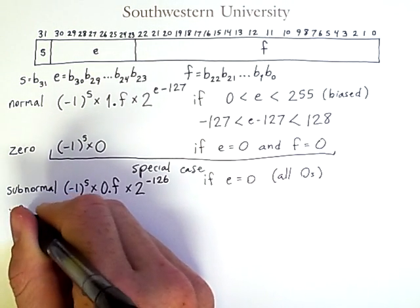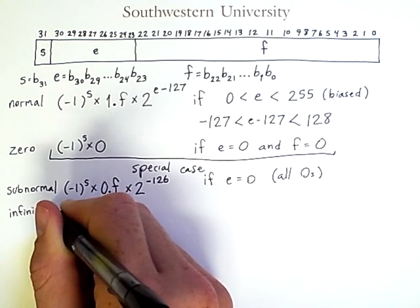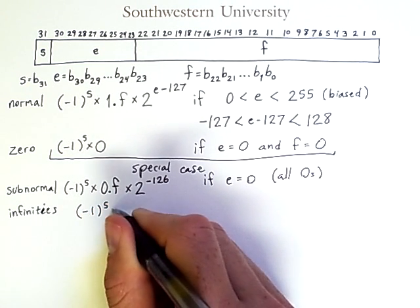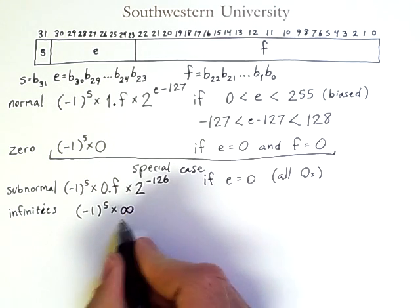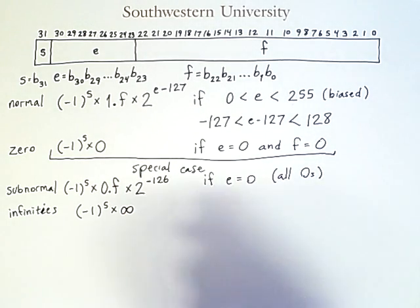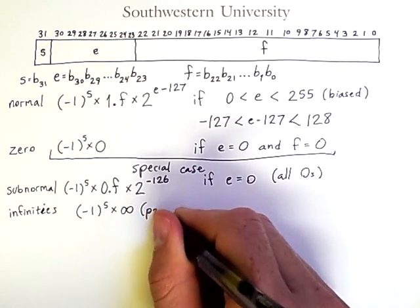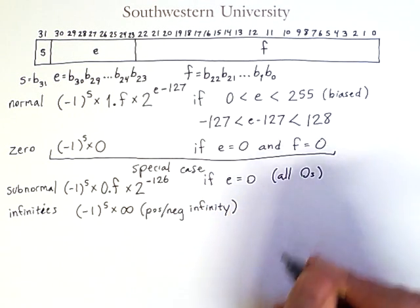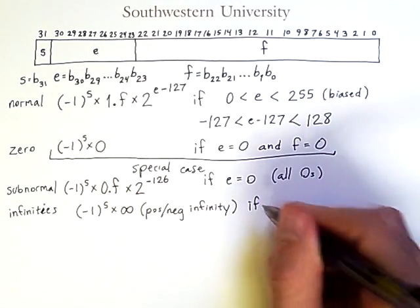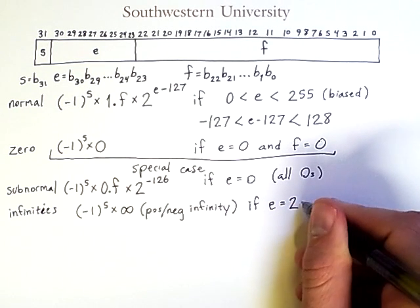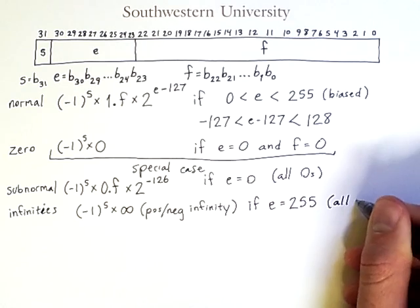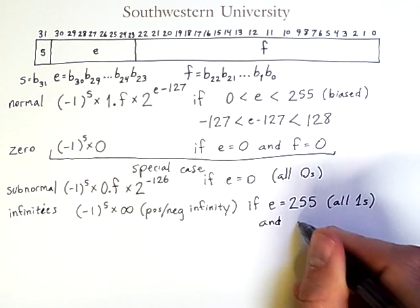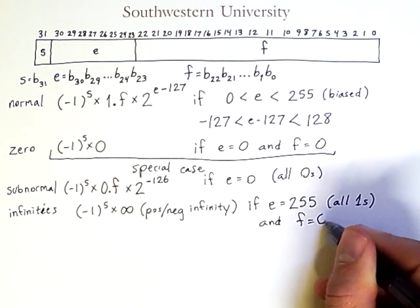One is the infinities. Specifically, positive or negative infinity. This is the infinity symbol. Sort of looks like an 8 turned on its side. And this is how we interpret the floating point number if E is equal to 255. In other words, all ones. And also, F is equal to 0. All zeros.